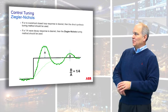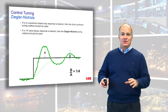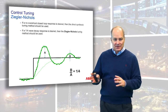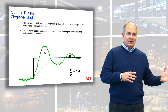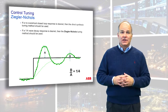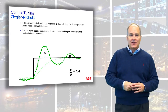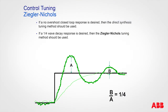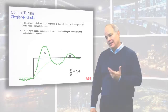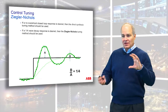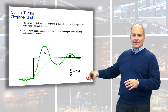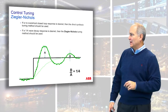I'll also quickly cover the Ziegler-Nichols tuning technique. That's been around since the 1940s, and it provides what's called a quarter wave decay, where each successive positive hump is one-fourth the size of the previous one. You can calculate tuning parameters to make that happen.